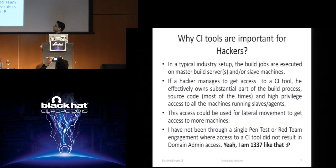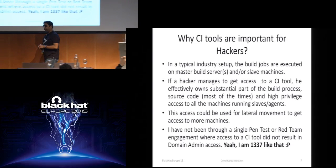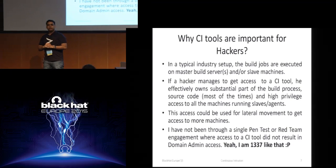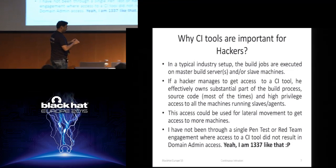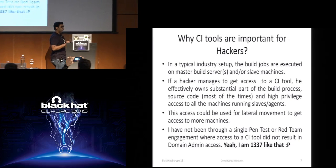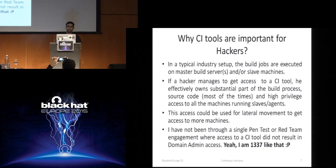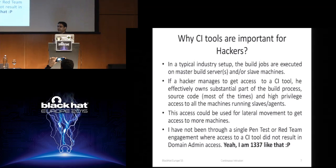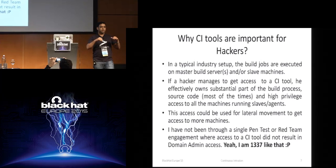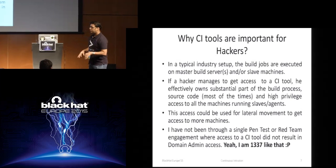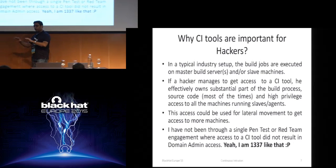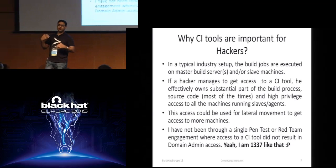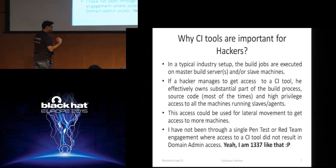In a typical industry setup, jobs on a CI tool may run on master or on slaves. So it is like a huge network with one node having access to a large number of nodes. Obviously, if a hacker manages to get access to a CI tool, he owns a substantial part of the network — the master node, the slave nodes. The slave nodes may include machines of developers, build teams, and a lot of different teams, which includes different platforms — Linux machines, Windows machines.